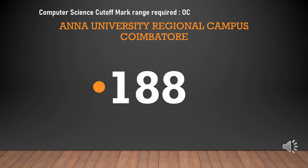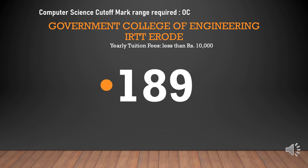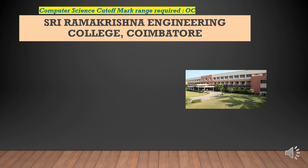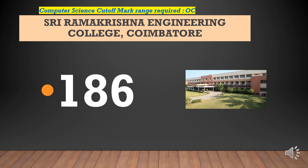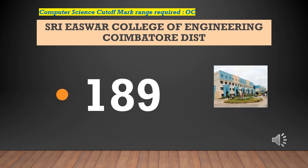Anna University Regional Campus Coimbatore — cut-off required for CSEOC is 188. Government College of Engineering IRTT Erode — cut-off required for CSEOC is 189. Yearly tuition fees less than Rs. 10,000. Sri Ramakrishna Engineering College — cut-off required for CSEOC is 186. Sri Iswar College of Engineering — cut-off required for CSEOC is 189.